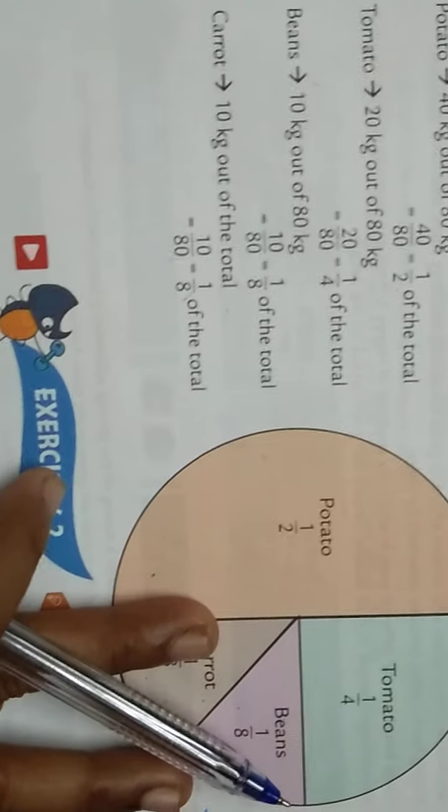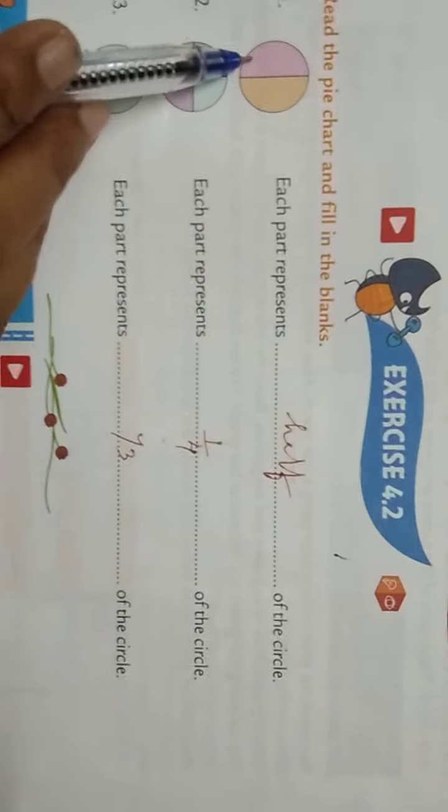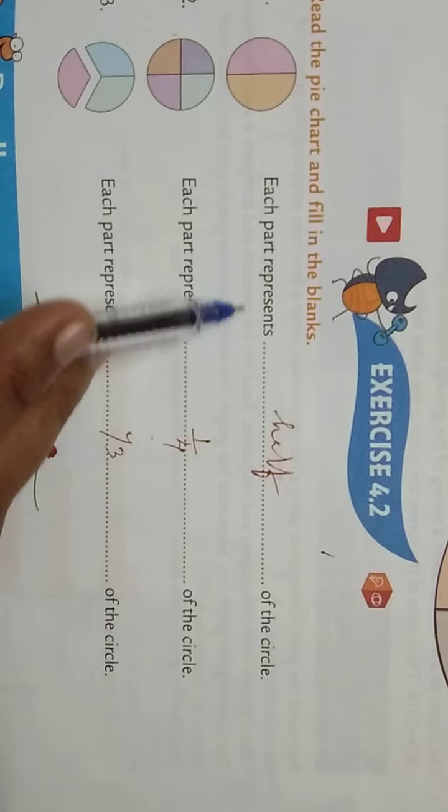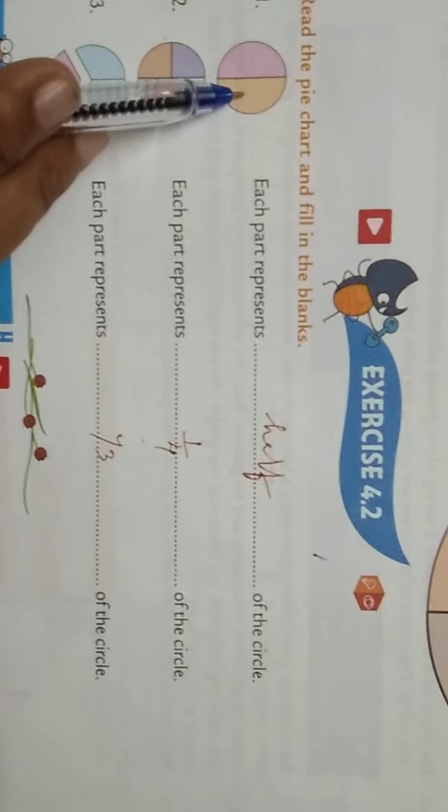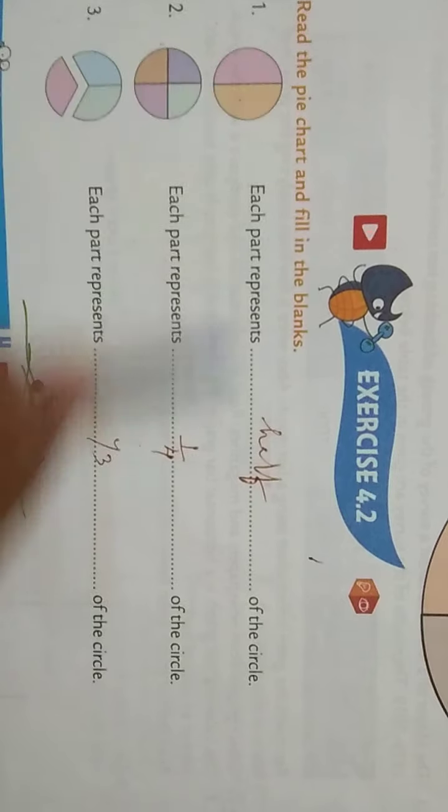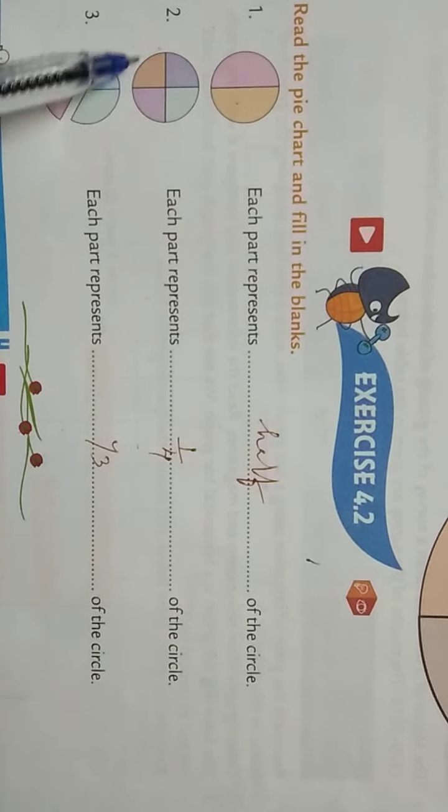Now look at this picture. Each part represents one half of the circle. Here the circle is divided into four parts, so each part represents 1 fourth.